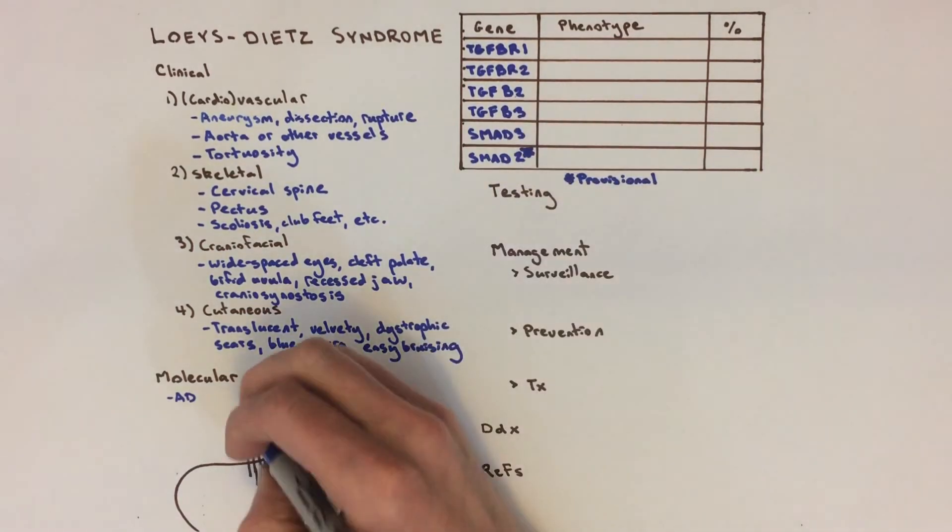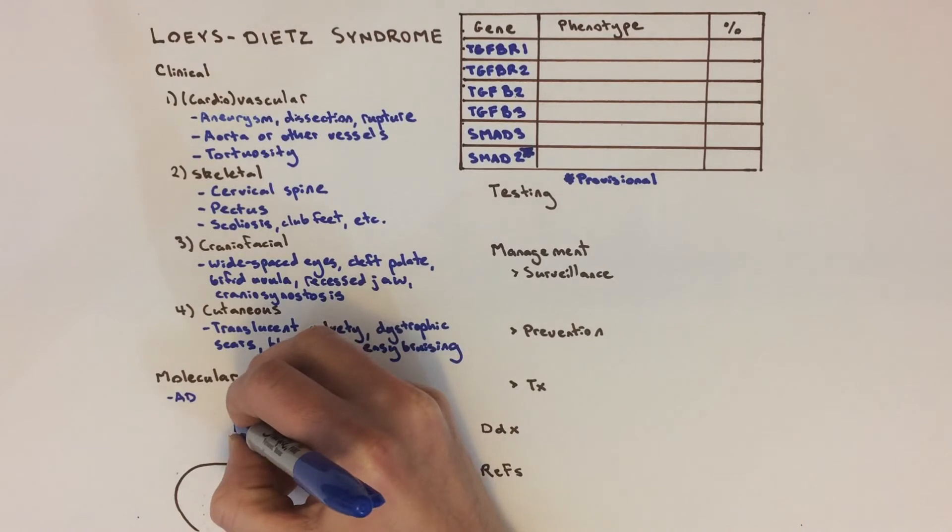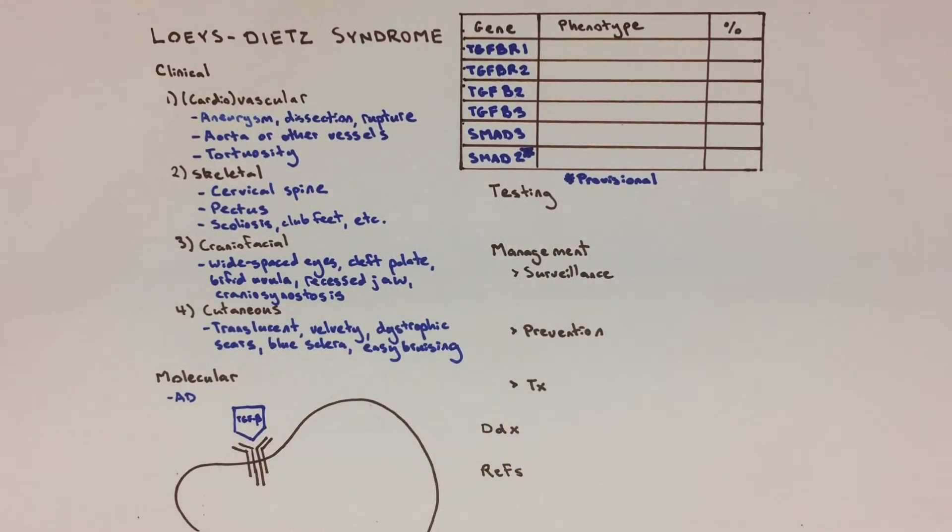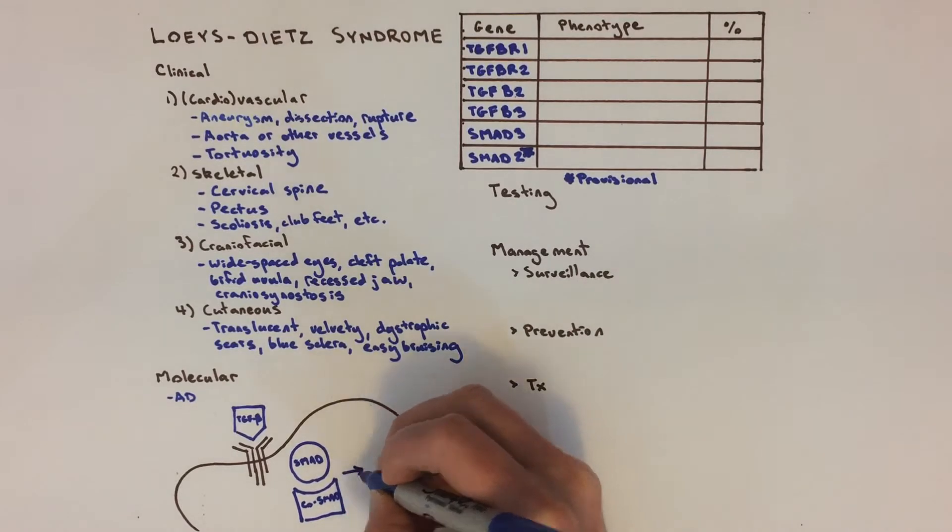All of the genes that, when mutated, cause Loeys-Dietz syndrome encode components of a signaling pathway called the TGF-beta or transforming growth factor beta pathway. This pathway consists of signaling molecules called TGF-beta, receptors, and intracellular effector molecules called SMADs. SMADs join with a co-SMAD, enter the nucleus, and cause changes in transcription that affect connective tissue.